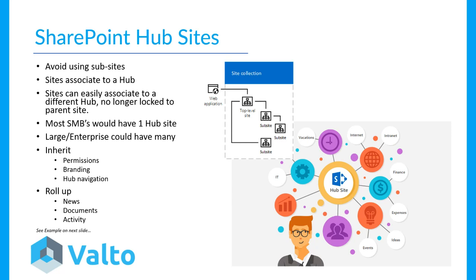Most organizations would only have one hub site, though you could have multiple. For example, an organization with multiple locations around the world might have a hub site per region — one for the US, one for Europe, one for Asia — especially if there's different content, different navigations, or even different branding for an umbrella-type company. The purpose of hub sites is that you can inherit permissions, branding — colors, themes — and most importantly, the navigation that runs throughout, keeping it consistent, including mega menu navigation with dropdowns.